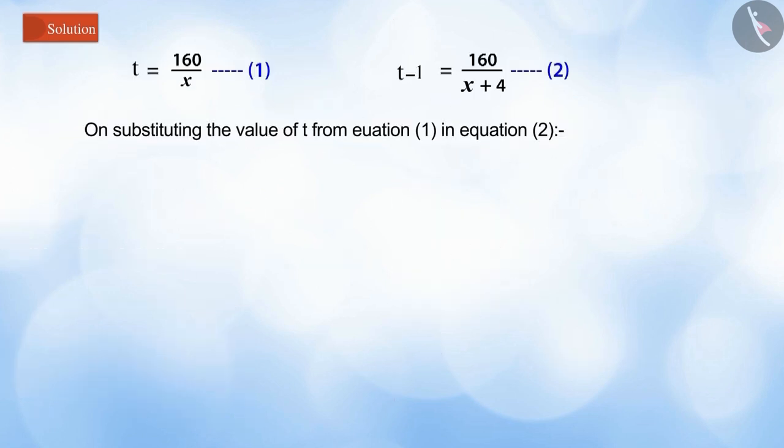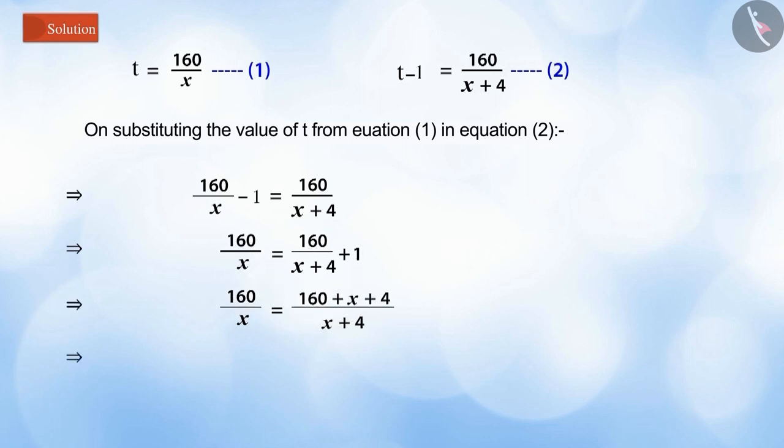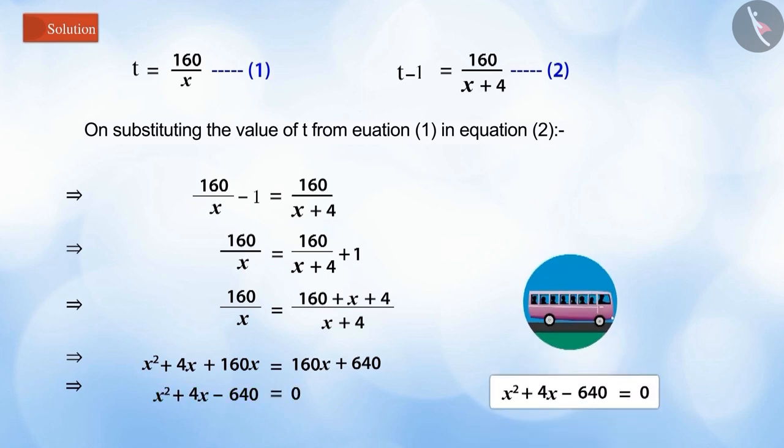Substituting the value of t from equation 1 in equation 2, we get x to the power 2 plus 4x minus 640 equals 0, which is the equation for the speed of the bus.